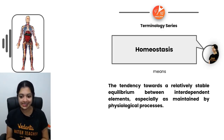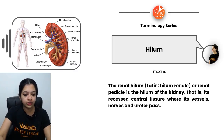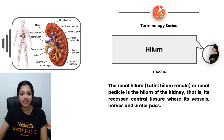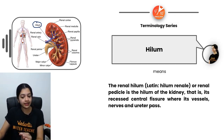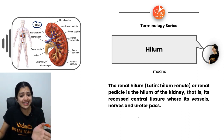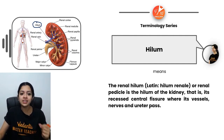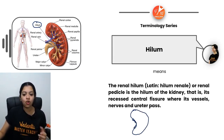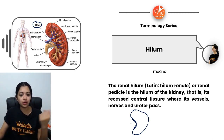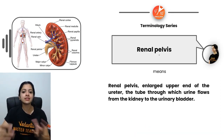The hilum is a part of the kidney — the primary excretory organ. It is a recessed central fissure where blood vessels, nerves, and ureters can pass into and out of the kidney. This part of the kidney, through which all those nerves, blood vessels, and ureters pass, is called the hilum.